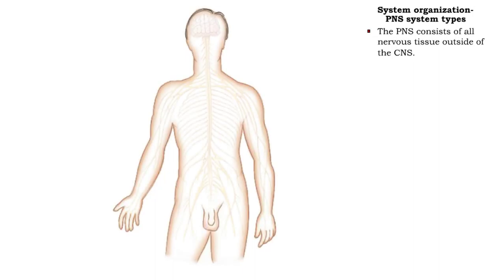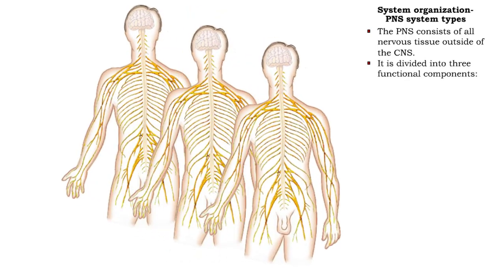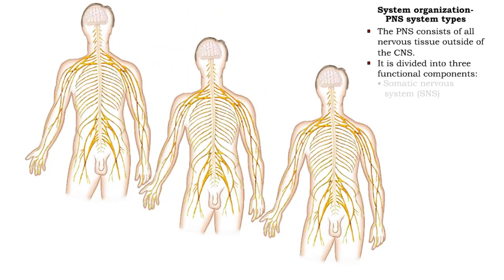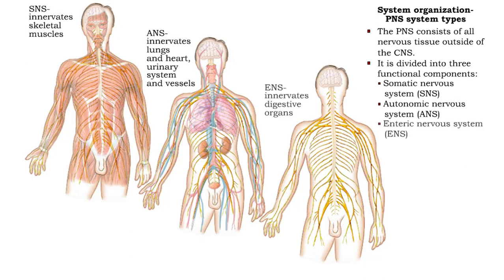The peripheral nervous system consists of nervous tissue outside of the central nervous system. It is divided into three different functional divisions: the somatic, autonomic, and enteric systems.